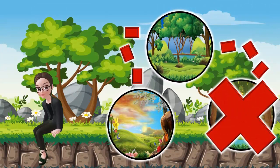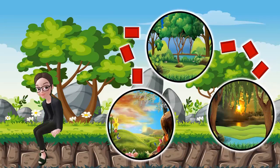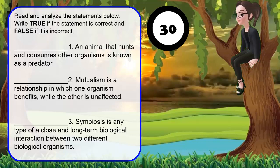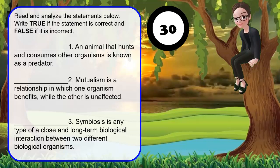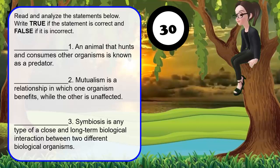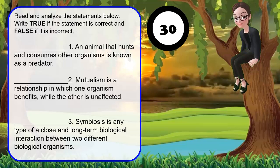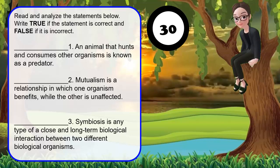Let's go to the third task. Read and analyze the statements below. Write true if the statement is correct and false if it is incorrect. Number 1: An animal that hunts and consumes other organisms is known as a predator. Number 2: Mutualism is a relationship in which one organism benefits while the other is unaffected. Number 3: Symbiosis is any type of a close and long-term biological interaction between two different biological organisms. You have 30 seconds to answer this. Your time starts now.